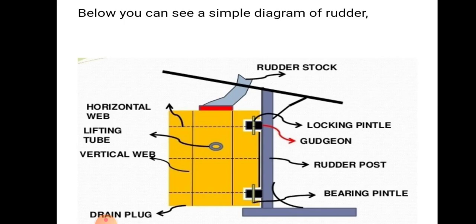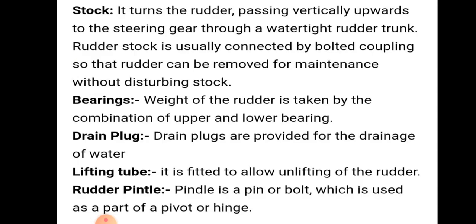Here you can see a simple diagram of a rudder. In this picture we can see: rudder stock on the top, then horizontal web, lifting tube, vertical web, drive plug, locking spindle, girdle pin, rudder post, bearing spindle, and outlet.